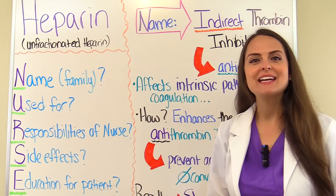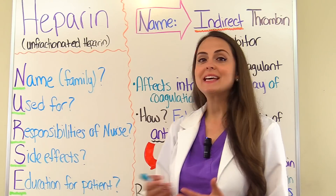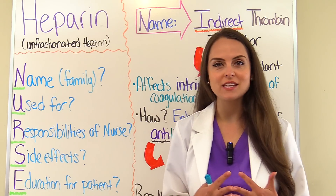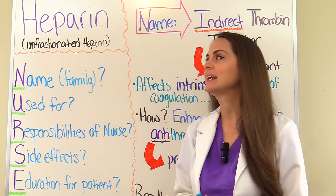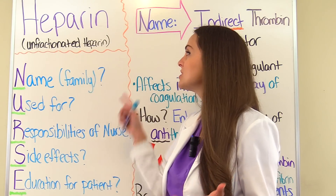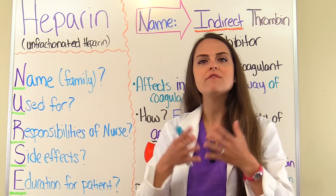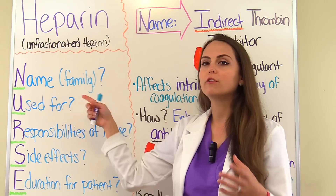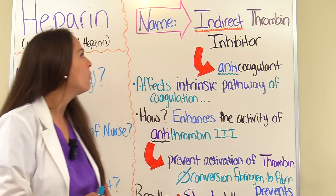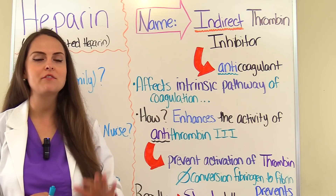As we've been studying these medications in this series, we have been remembering the word NURSE because this helps us remember those important questions we need to ask ourselves while studying these medications. We're dealing with heparin, and sometimes you may see it written as unfractionated heparin. The first thing we want to ask ourselves is what family name does this drug fall into, because that's going to tell us how this drug works. Heparin is part of the indirect thrombin inhibitor family.